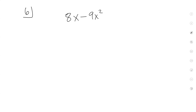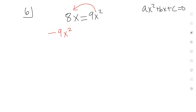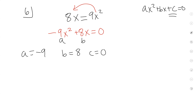Is this in standard form? Nope. It has to be ax² plus bx plus c equals zero. So I'm going to move terms over so it becomes negative 9x² plus 8x equals zero. Now it is in standard form. My a value is negative 9, b is 8, and I don't have a c value, so c is just 0.